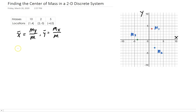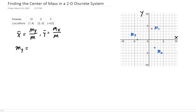Let's calculate the moment about y first. Since it's in two dimensions, the y-axis is going to act as the balance point — the plane is balancing on that y-axis. To get the moment about y, you take the masses at each point and multiply by the x-value, because the x-value represents the distance from the y-axis.